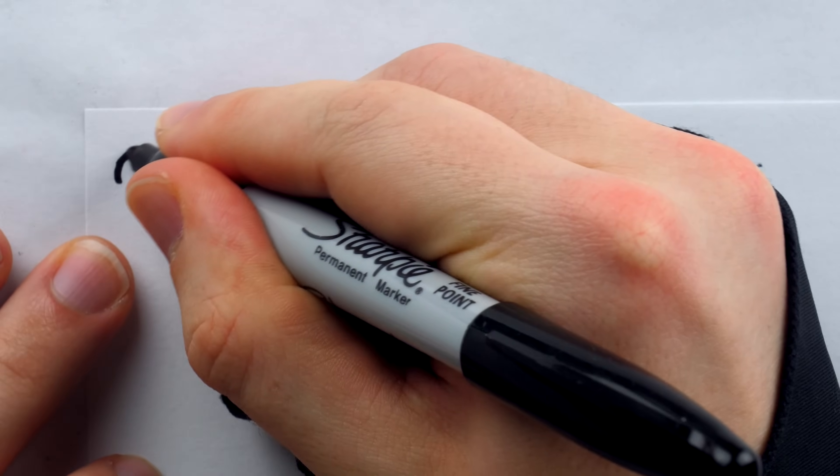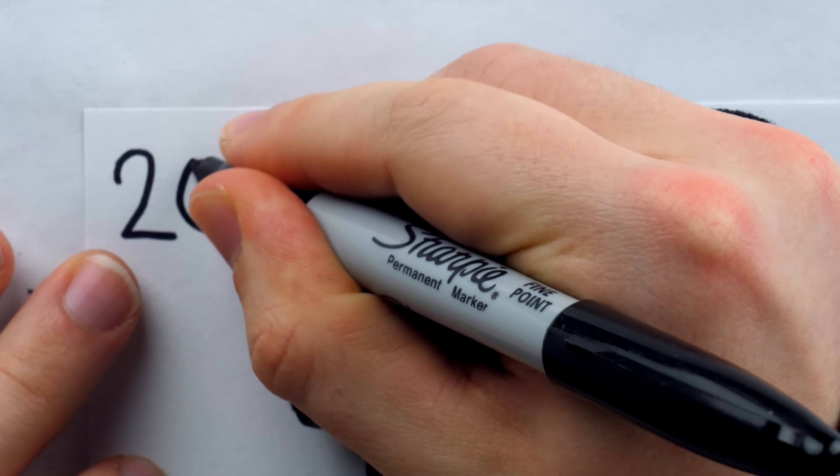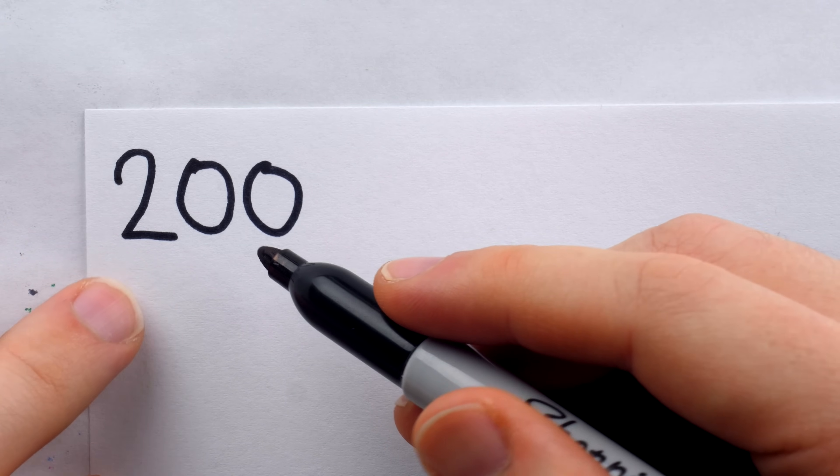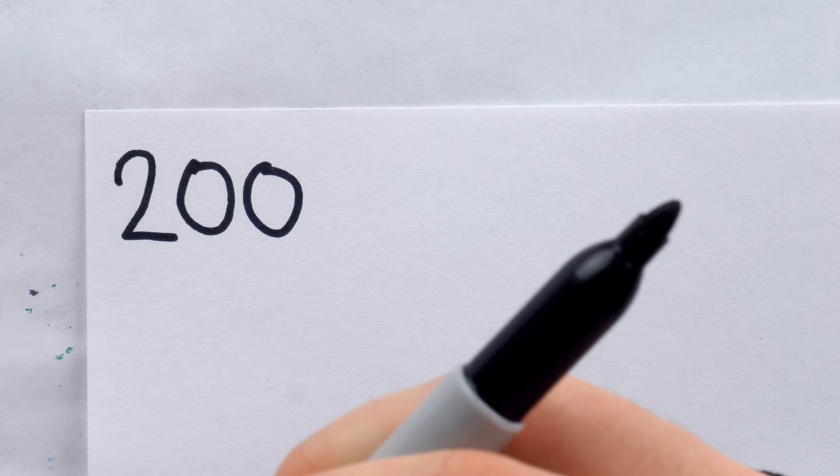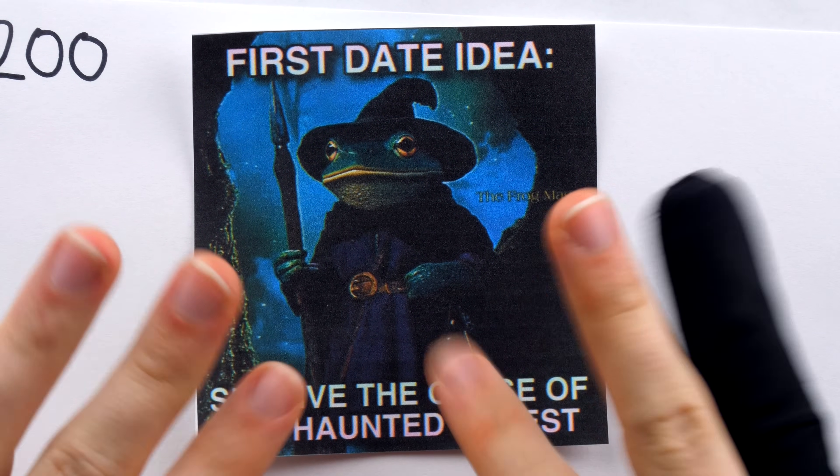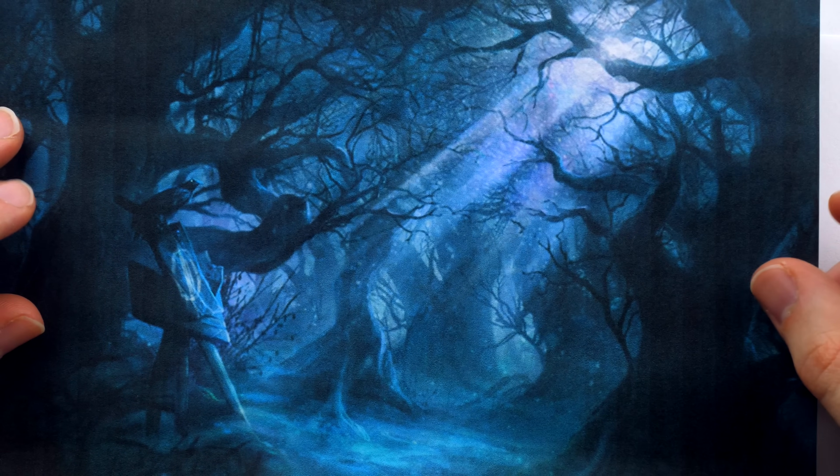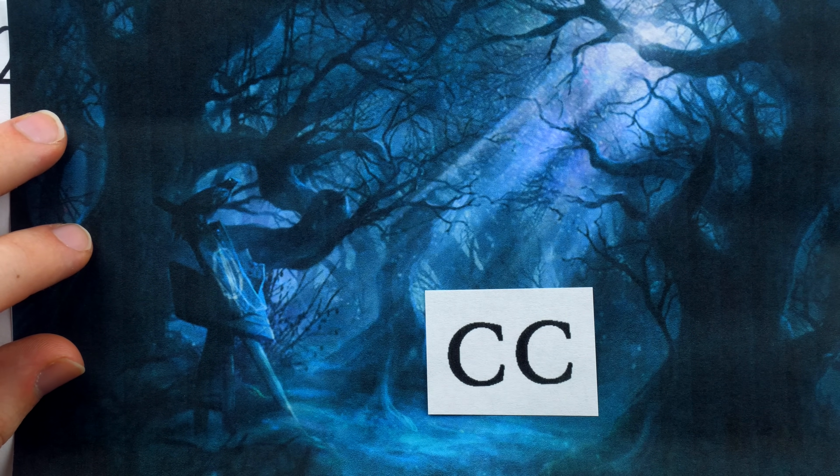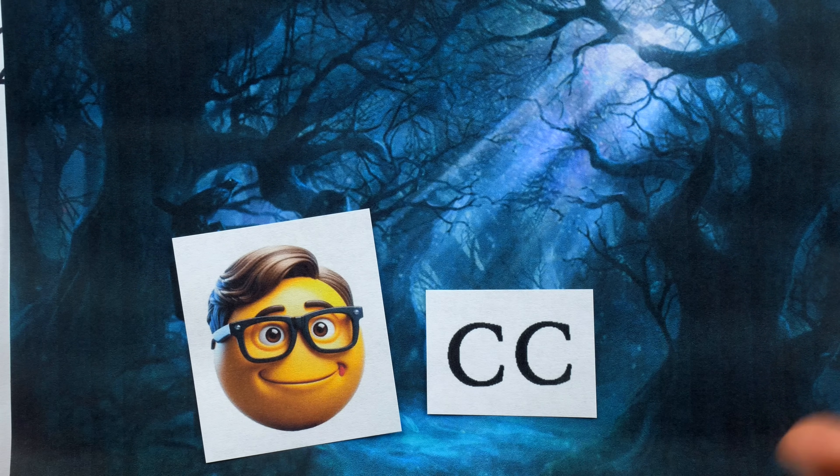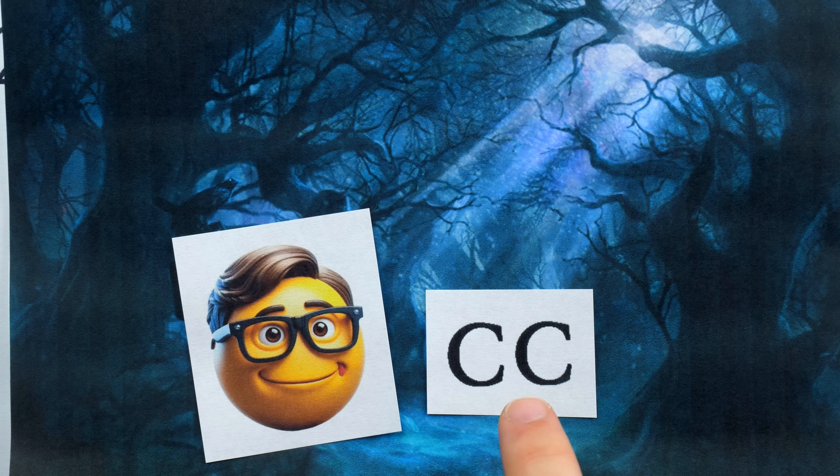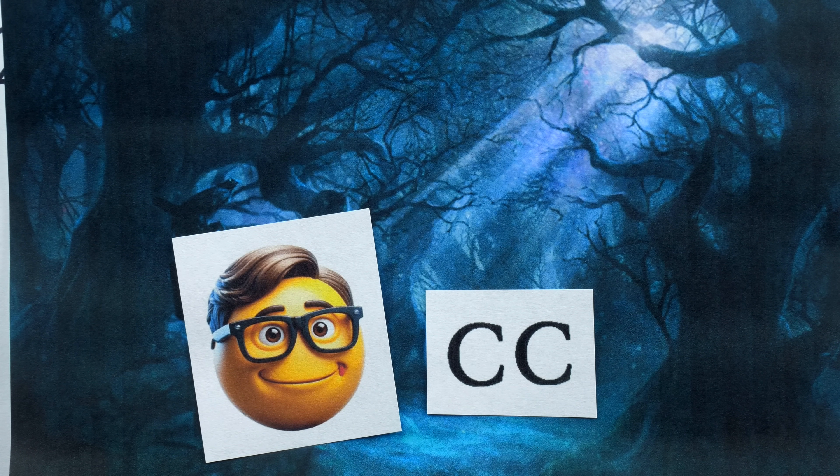You might think that you know the number 200. It's the number that comes after 199, the number before 201. But do you really? Suppose you went on a date with 200. Perhaps you and 200 embark on a romantic evening trying to survive the curse of the haunted forest. I contend that this date is inadvisable because you really have no idea who you've just wandered into the haunted forest with.